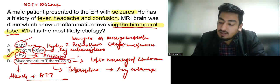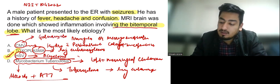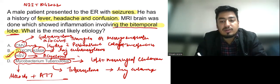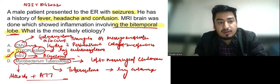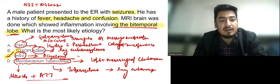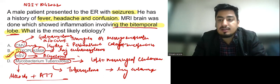For CMV, you can give ganciclovir or foscarnet. For toxoplasma encephalitis, tell me in the comment section which drug you generally give for treating it. All the best everyone, we will meet in the next class.